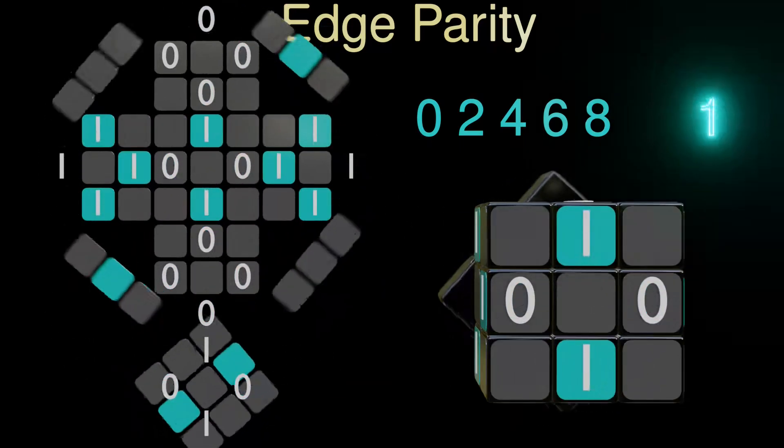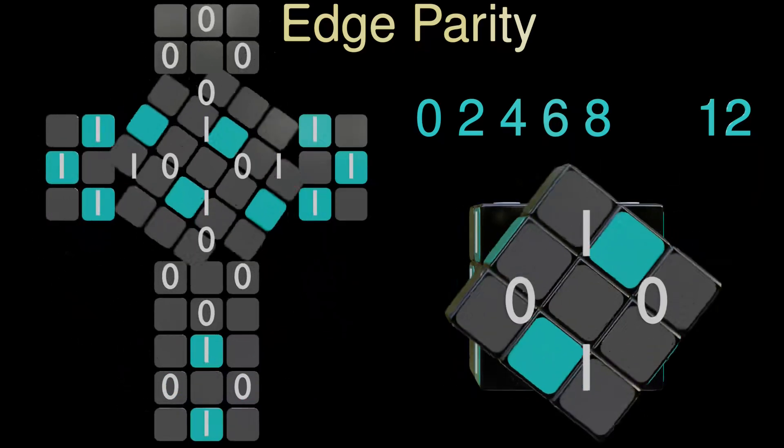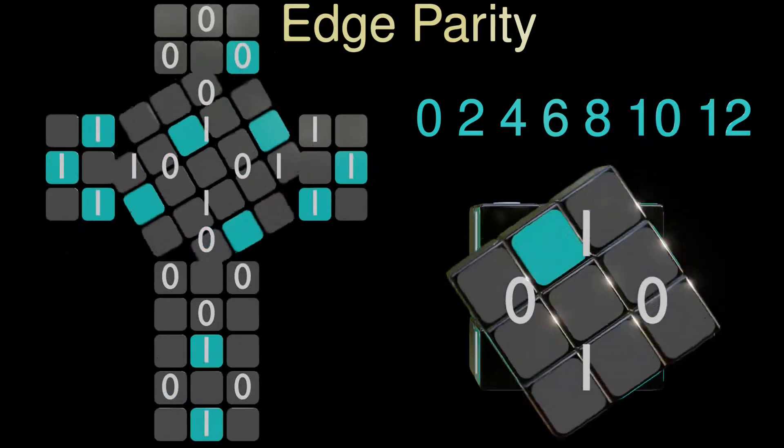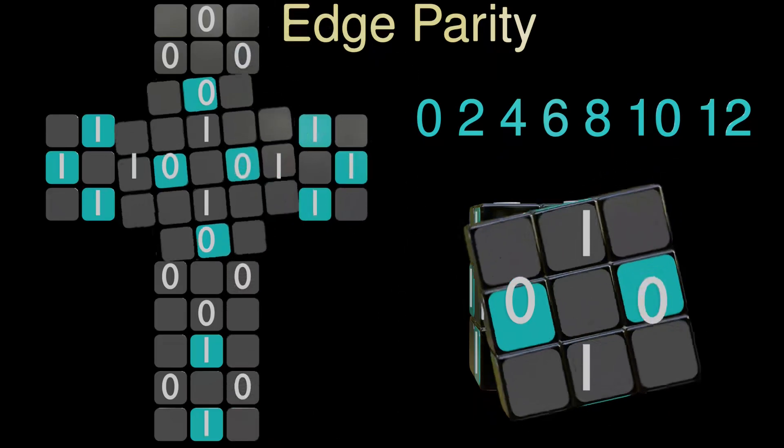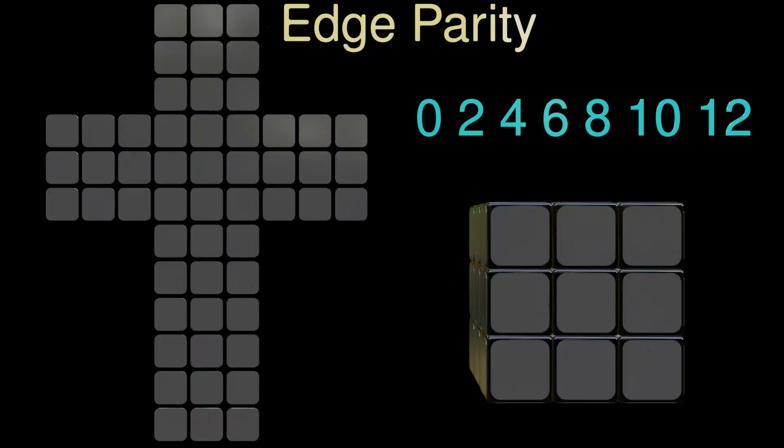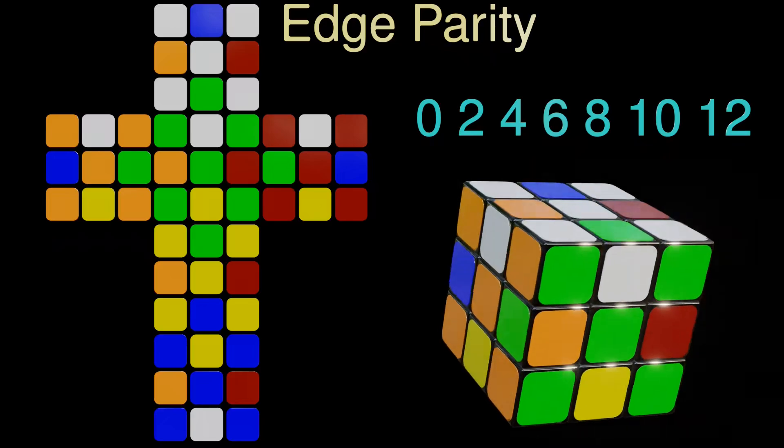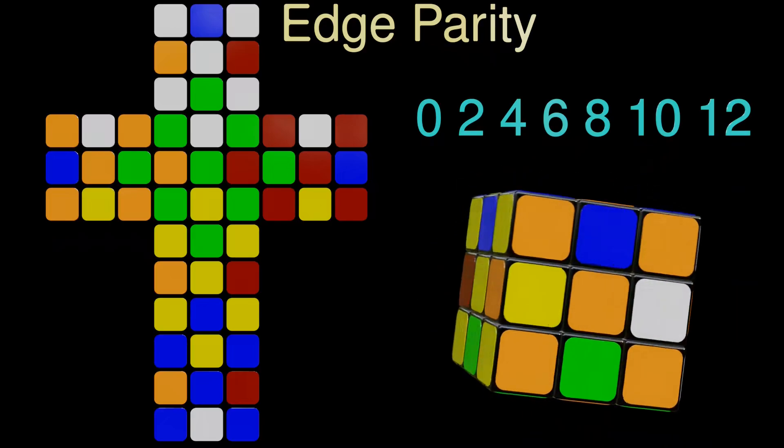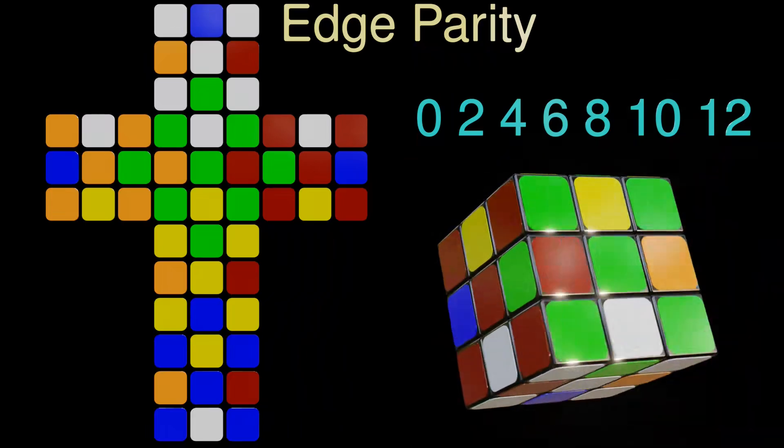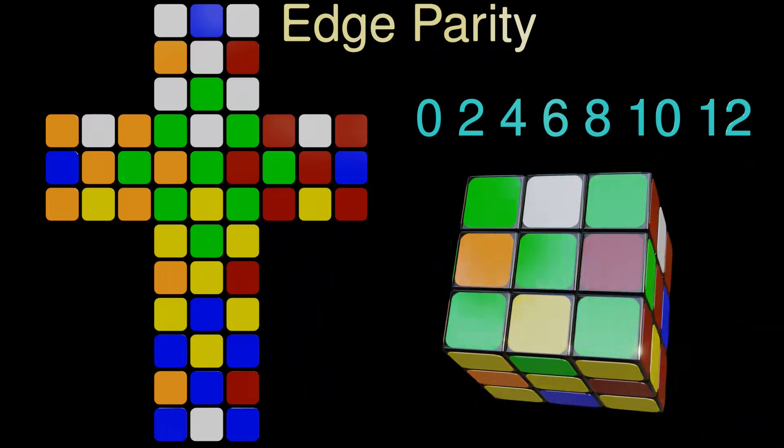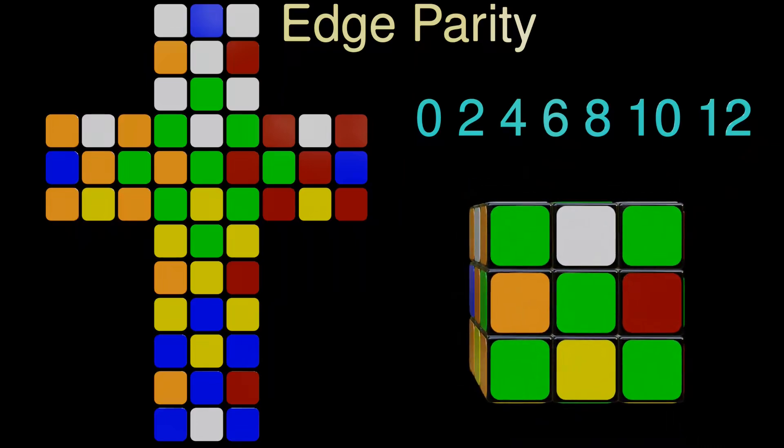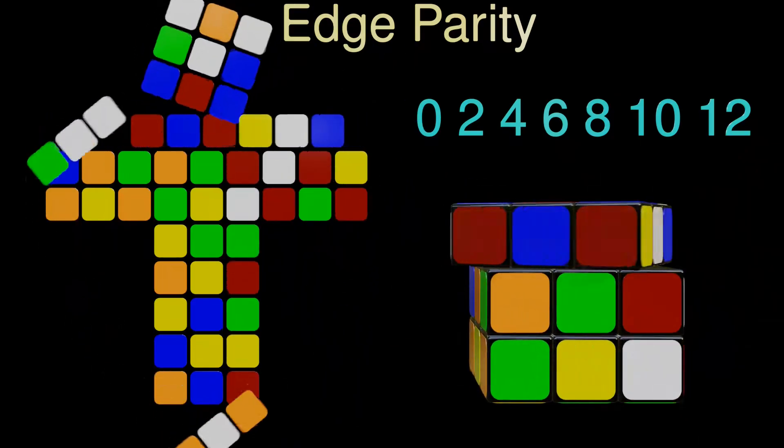The sum always changes by an even amount. The transformations on the screen demonstrate that every even number between 0 and 12 is achievable. In this particular example, we arrive at the superflip configuration, where every edge is flipped while the corner pieces remain unchanged. As a fun fact, if we apply this transformation again, it restores the cube to its original state.